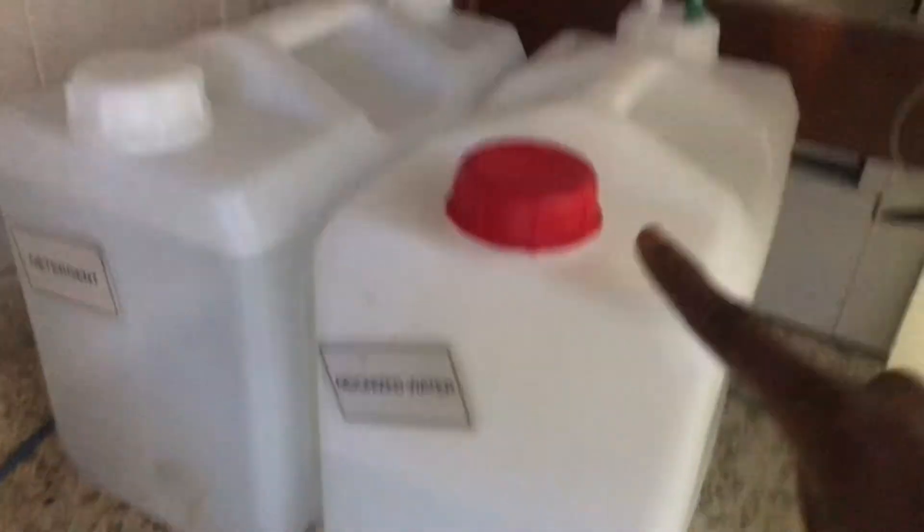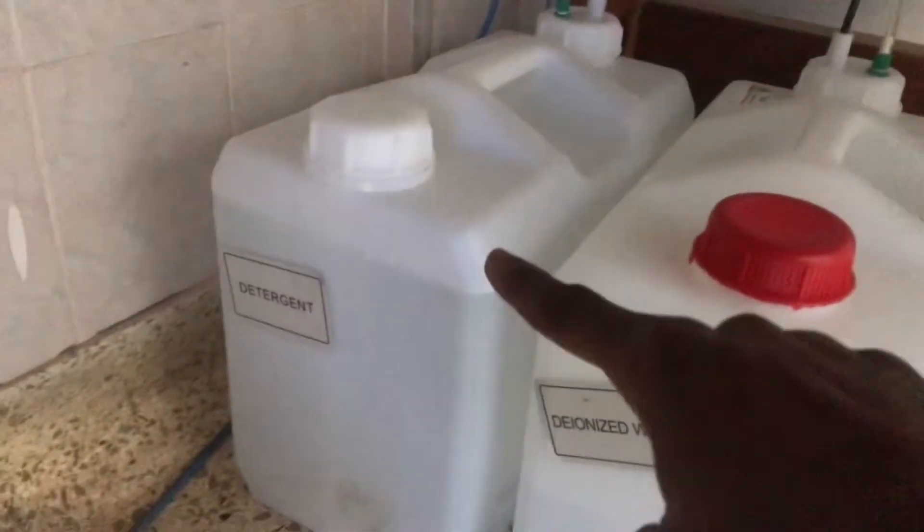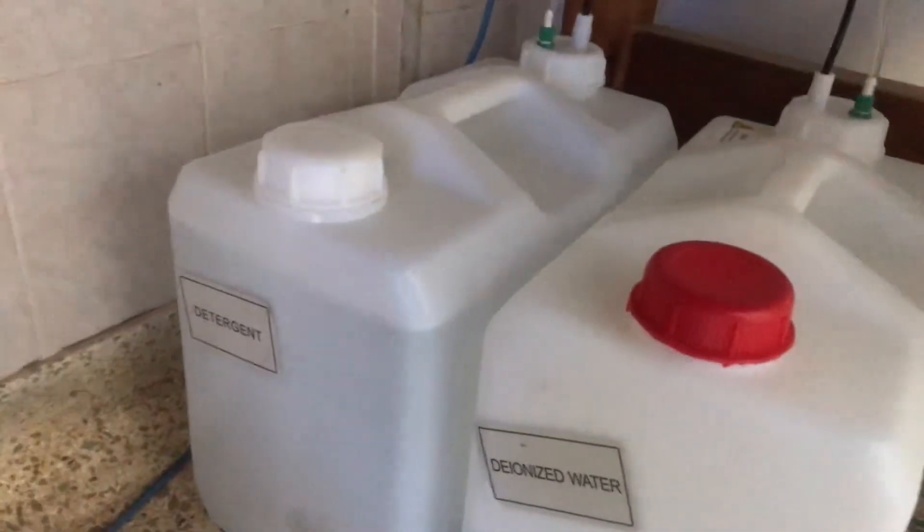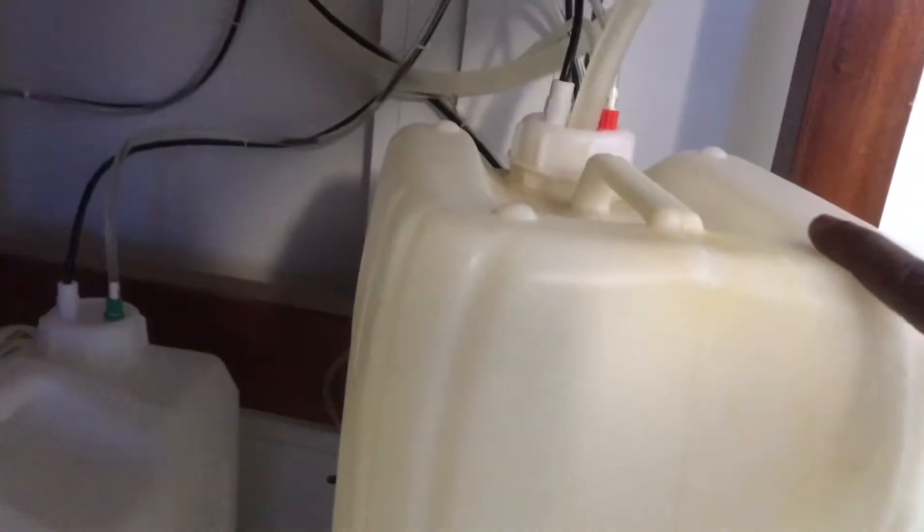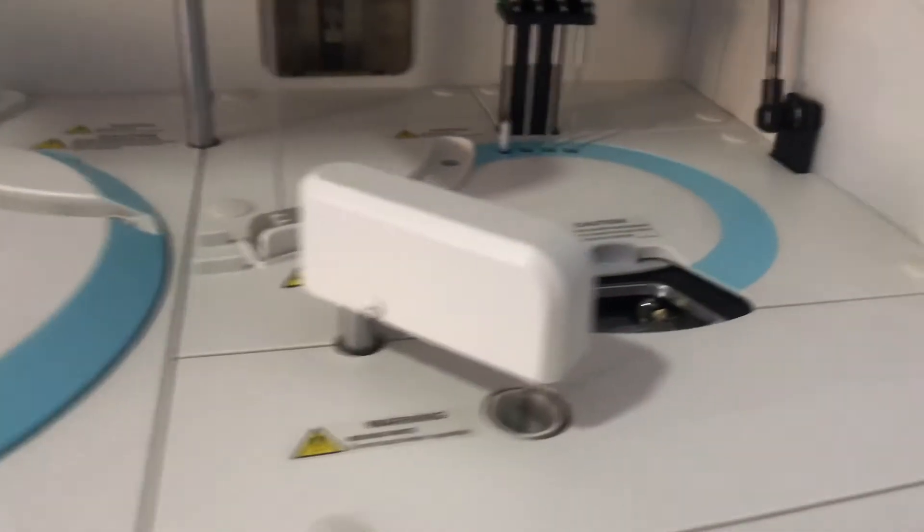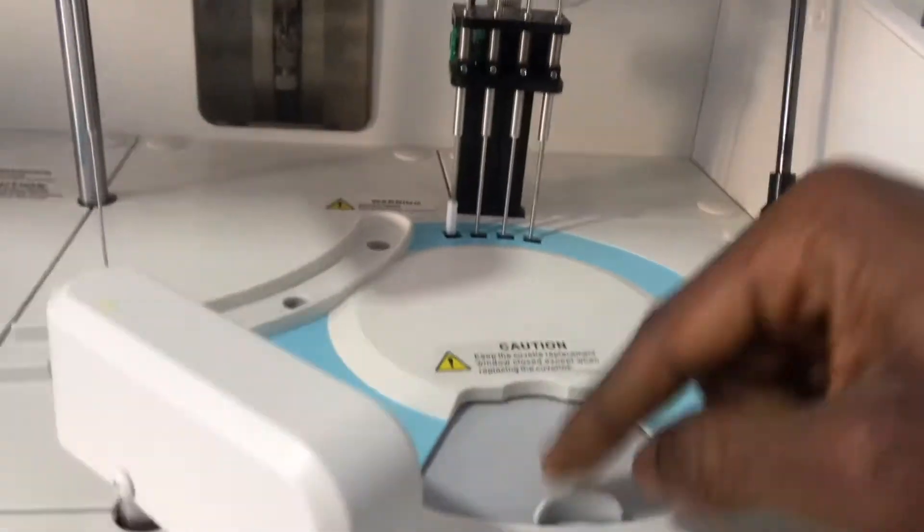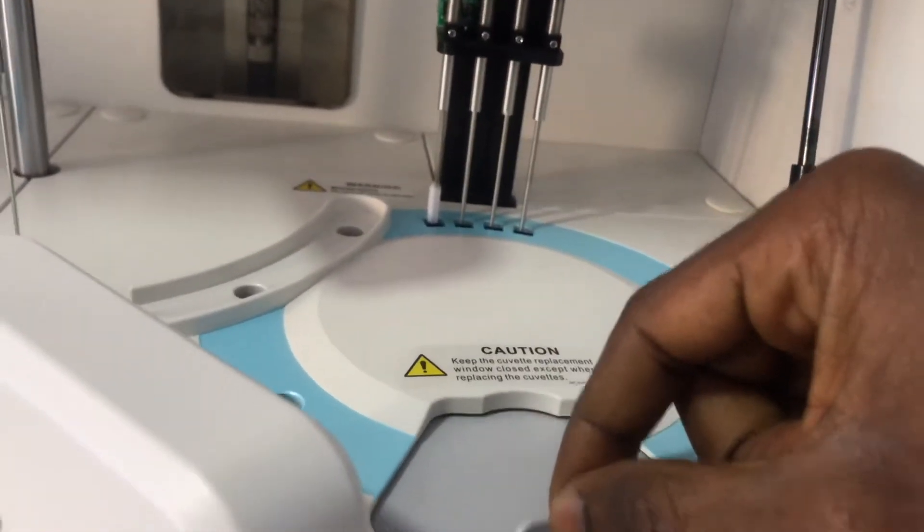Let me show you the external containers. Here we have the ionized water, here we have the detergent, and this is our waste container where all the waste comes in. If you observe, you realize this is the sensor and this is the tube that the ionized water passes through—same for this, and then same for this one.